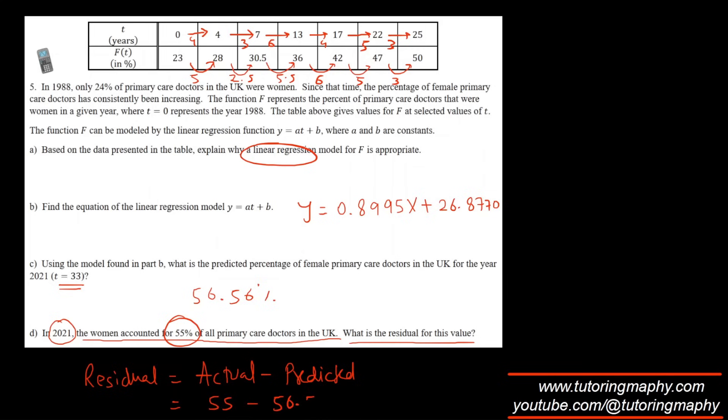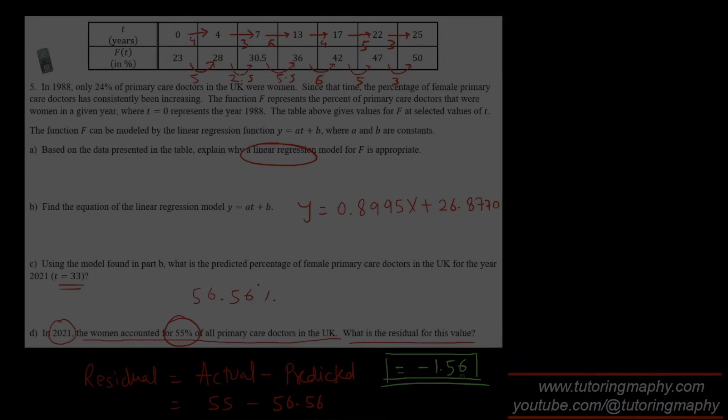The residual is given by the actual value minus the predicted value. The actual value is given to us as 55, so that would be 55 minus 56.56. The number will come out as negative 1.56 percent. This is the residual value of this question.